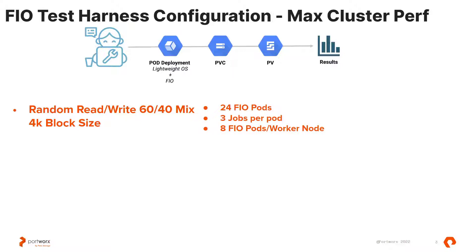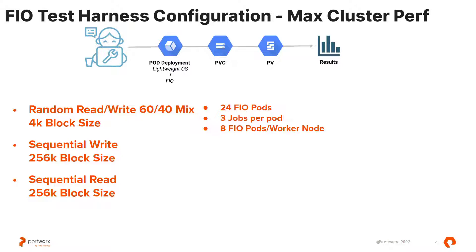For the 4K IOPS test, we're going to run 24 FIO pods with 3 FIO jobs per pod, meaning 8 FIO pods per worker node in the storage cluster. The second test will be a sequential write test with a 256K block size to test write throughput to those NVMe devices. The third test will be a sequential read test with a 256K block size. For these sequential throughput tests, we'll again have 24 FIO pods, this time running 16 jobs per pod to saturate the bandwidth down to those NVMe devices — again 8 FIO pods per worker node.